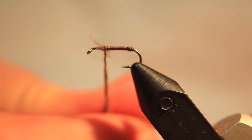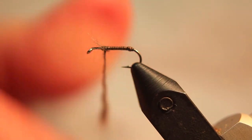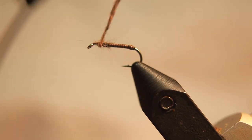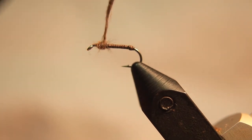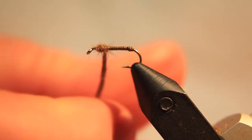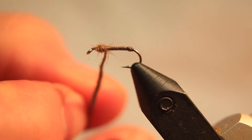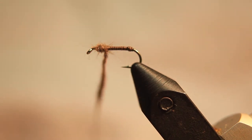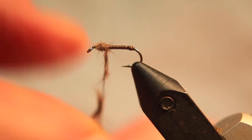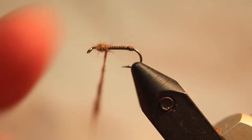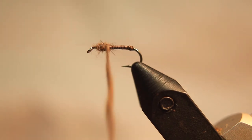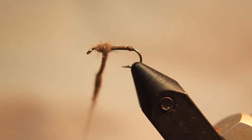And then we wind the thorax. We need to now create the thorax of the midge pupa. Make sure it's nice and tight. And build the body up.